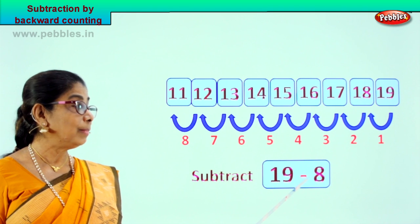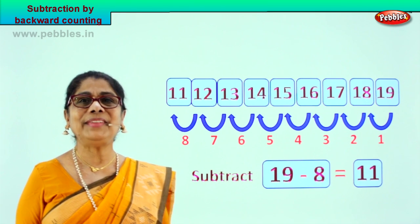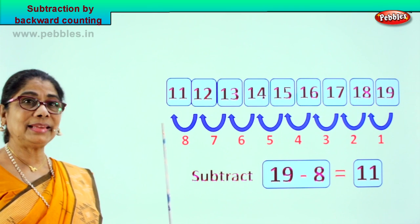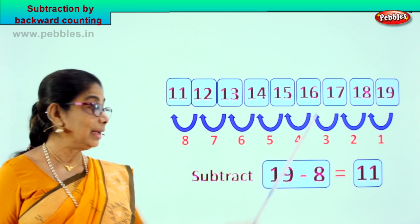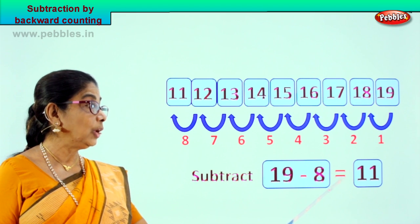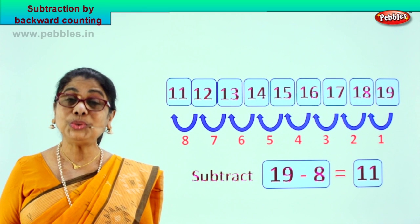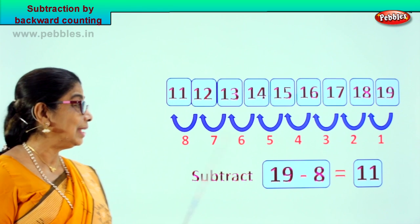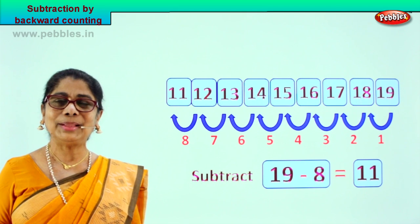19 minus 8 is equal to 11. From 19 we counted 8 steps backward — we got the answer. Did you enjoy the backward counting? Very interesting, isn't it? Count 8 steps and there you are — you get the answer. Beautiful.